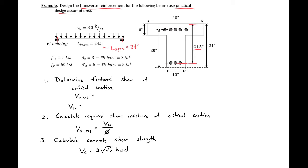The first thing we need to do is determine our factored shear at the critical section. We can first find our V_max, which will equal the reaction at our left or right support. To find our reaction we'll take 8 kips per foot, which is our factored distributed load, times 24 feet, which is our span length, divided by 2. We get our V_max to be 96 kips.